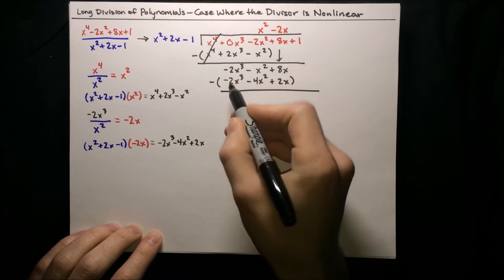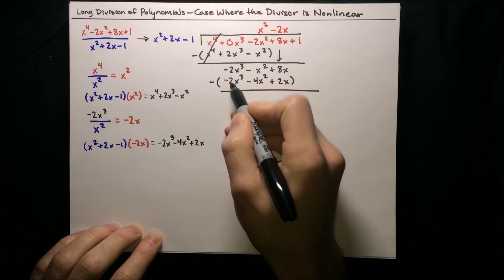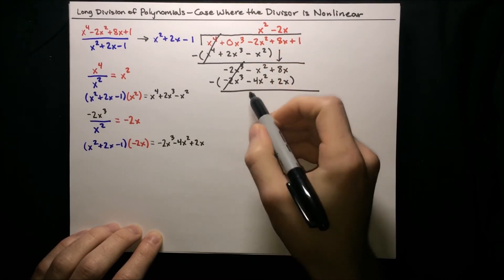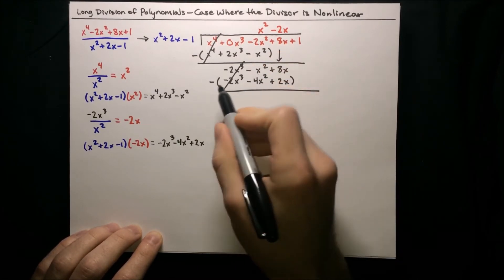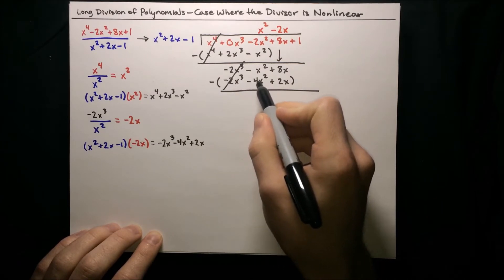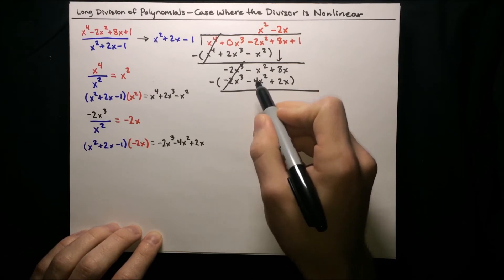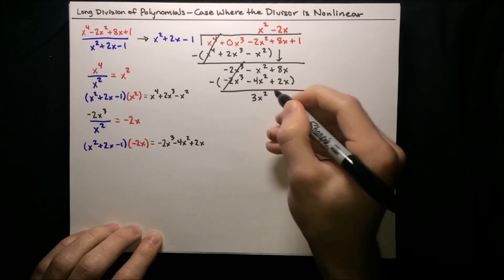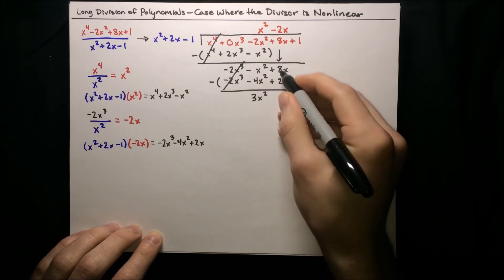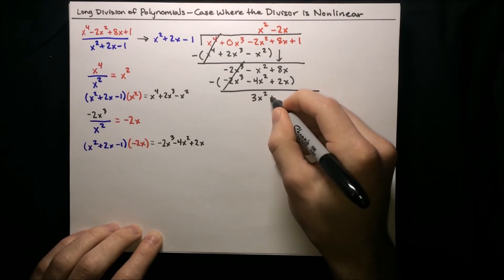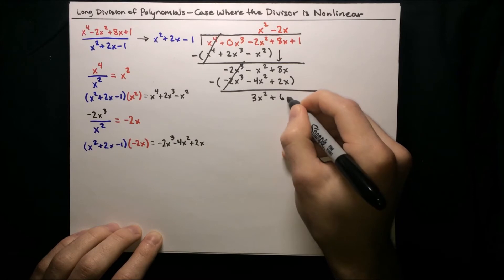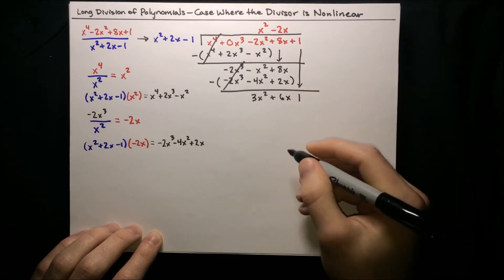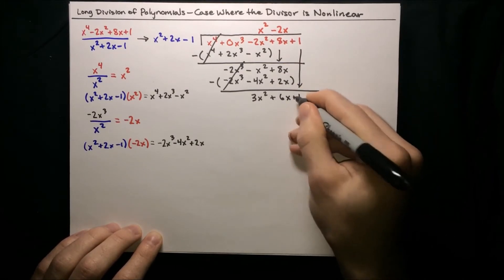Again, the leading terms cancel — that's what we wanted. Then negative x squared minus negative 4x squared is negative x squared plus 4x squared, which is 3x squared. And 8x minus 2x is 6x. Bring down our last term, plus 1.